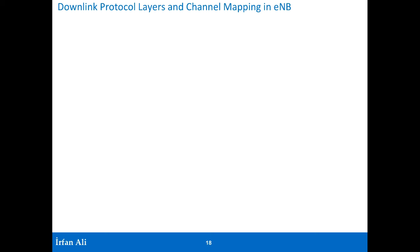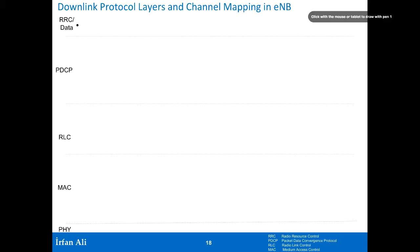We'll try to give you a brief idea about what the protocol layers and channel mapping in eNodeB are. These are your protocol layers in your eNodeB. Starting from the very top, you either have the Radio Resource Control in the control plane, or you have the data flowing down through the Packet Data Convergence Protocol, then the Radio Link Control, Medium Access Control, and Physical layers.